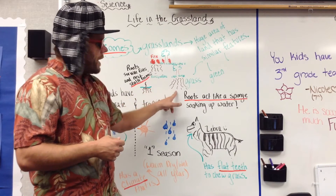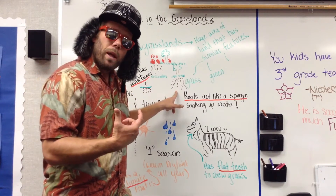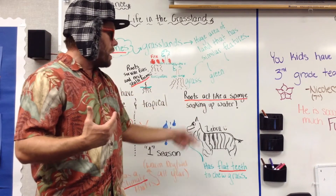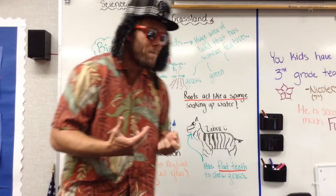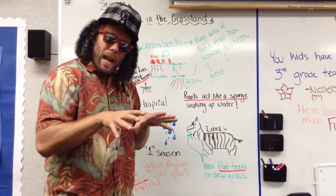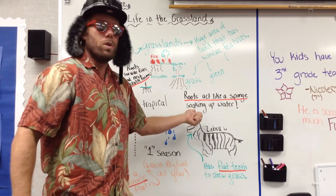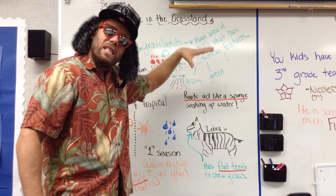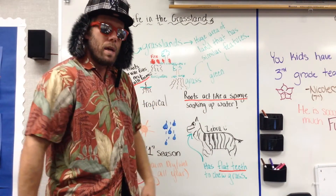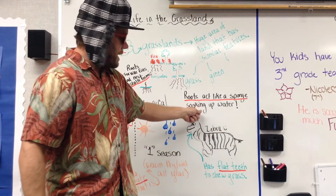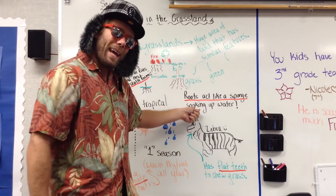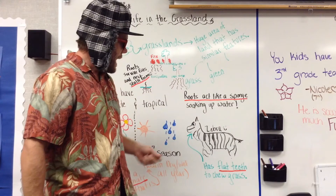Another thing about the roots that was really important in this lesson was that roots act like a sponge soaking up the water. There isn't a whole lot of rain that happens in the grasslands, so it's really important for those roots to dig down deep and soak up as much water as they can. That is an adaptation that the plants and trees in the grasslands have.